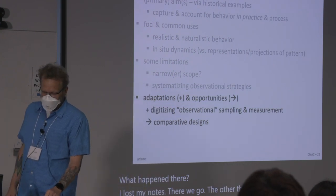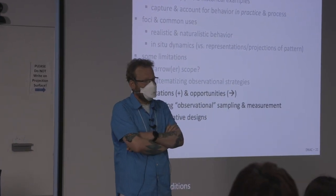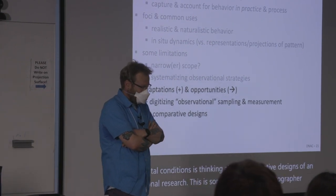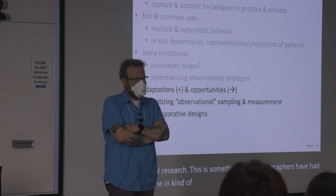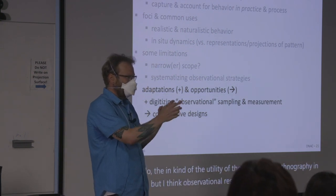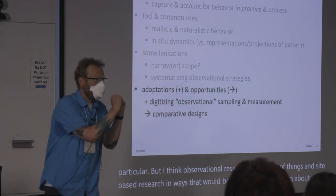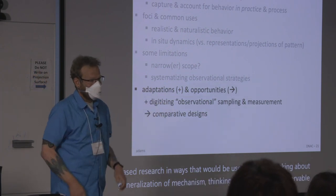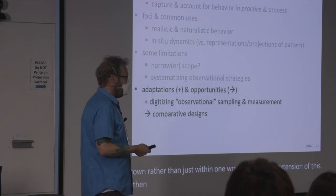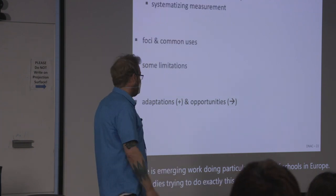Similarly to experimental conditions, thinking about comparative designs in observational research is valuable. Ethnographers have debated the utility of comparative ethnography, but I think observational research as a whole often thinks in site-based terms — whereas if we're thinking about generalization of mechanism, seeing how it's observable across locales would be useful. There is emerging work doing this, particularly in schools in Europe, and I think that's somewhere networks is heading.